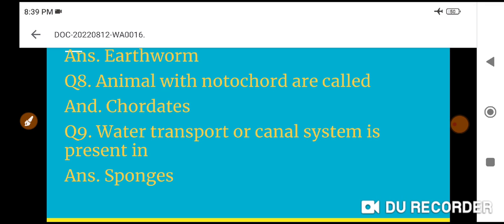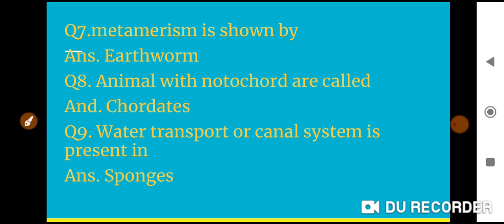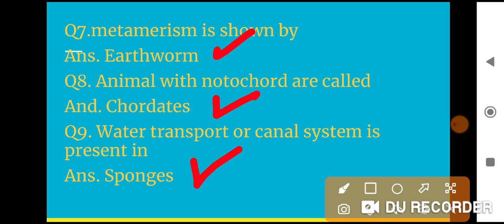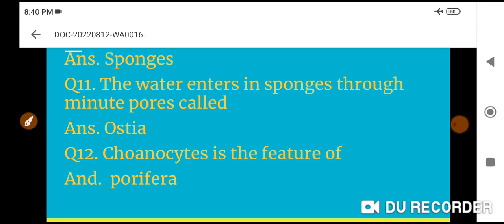Question 7: Metamerism is shown by earthworm. Question 8: Animals with notochord are called chordates. Question 9: Water transport or canal system is present in sponges.